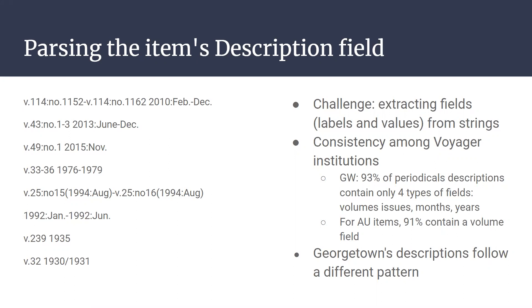In MARC records, labels and values are structured so you can clearly identify what kind of label is associated with what value. In the item description field, the labels and values are just part of one long string. The technical challenge was: can we parse this and extract, for instance, from the first example shown, that it refers to the range between volume 114 numbers 151–152 and number 1162, spanning February through December 2010?